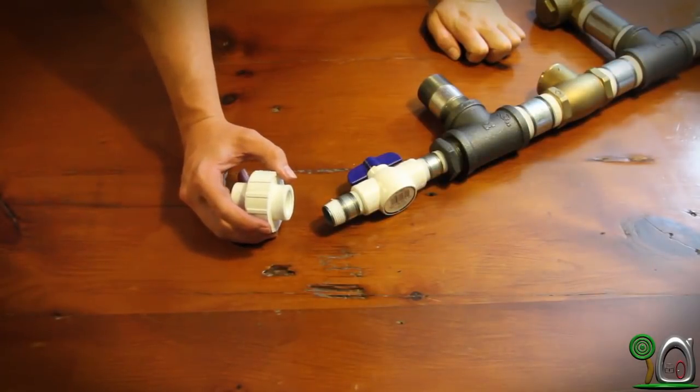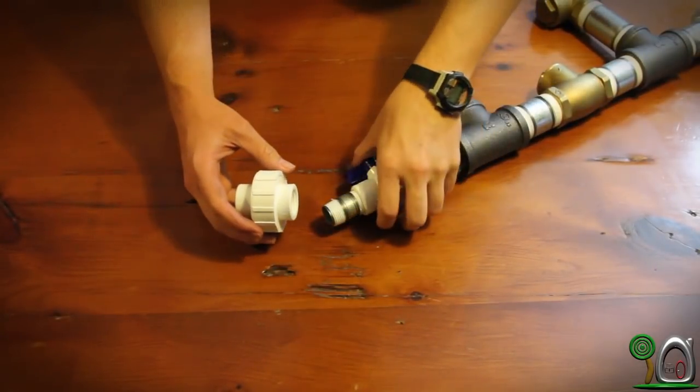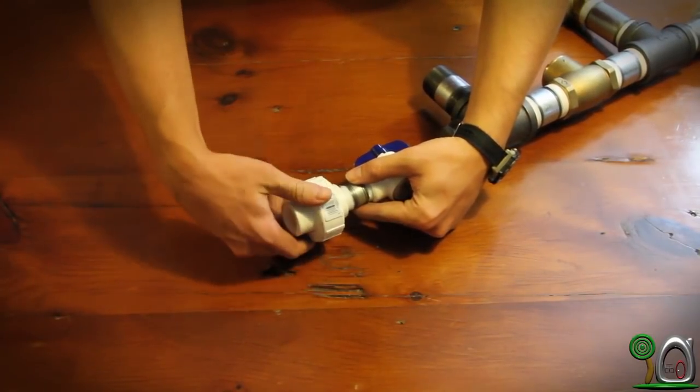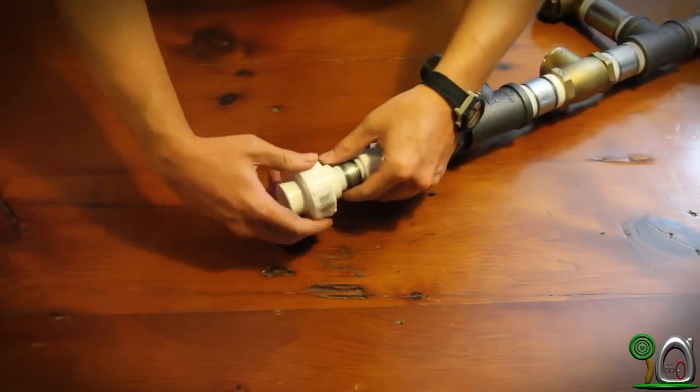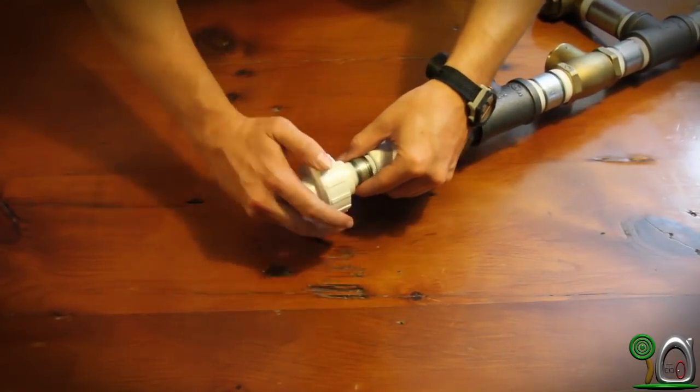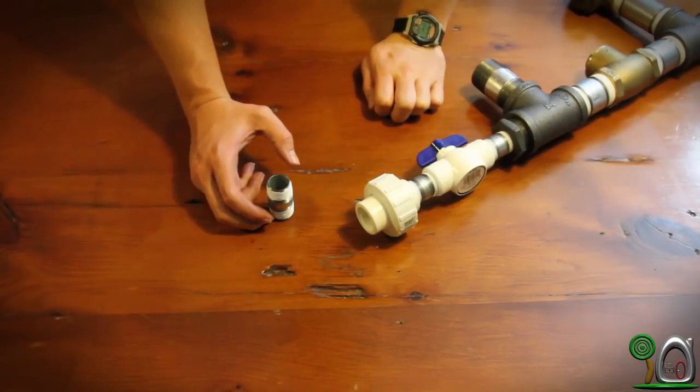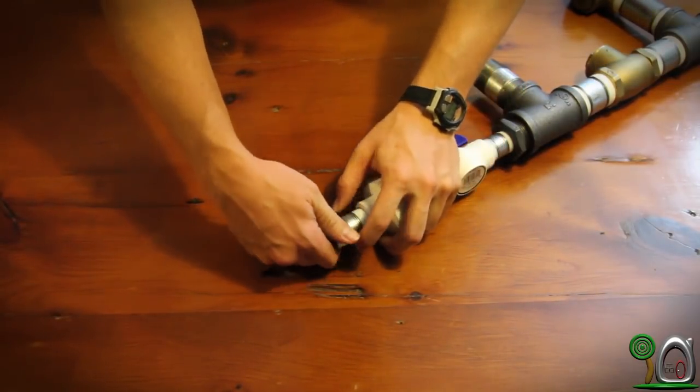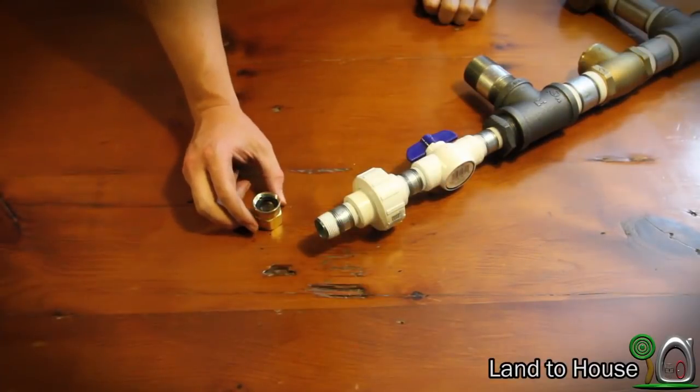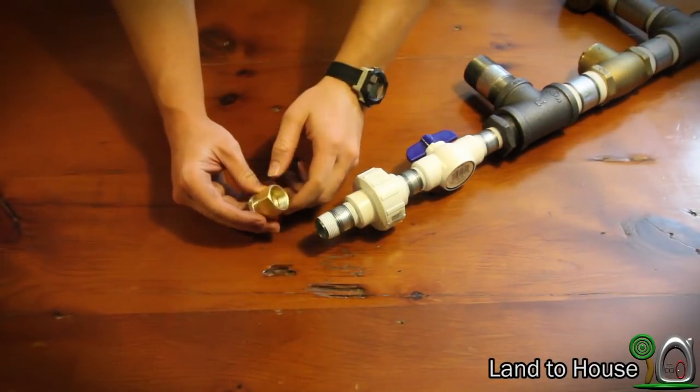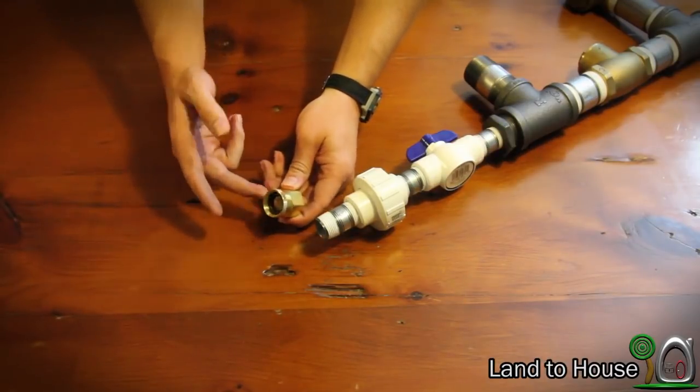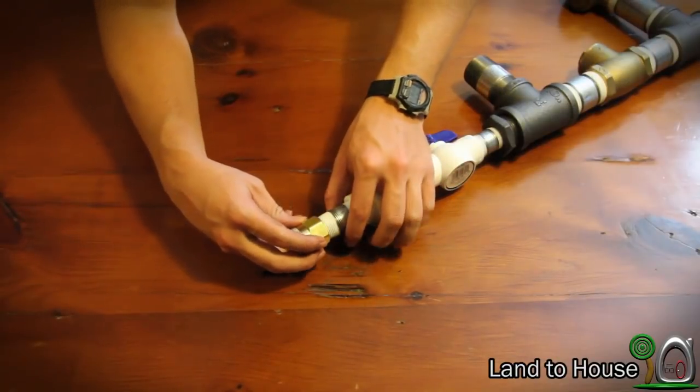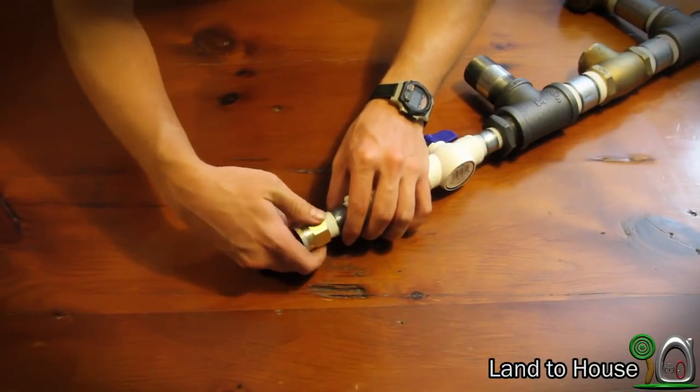For step 21, take your union, your 3 fourths inch union, and screw that onto that last 3 fourths inch pipe nipple. Step 22, take a 3 fourths inch pipe nipple and attach it to the other end of the union. For step 23, take your garden hose on one end thread to a pipe thread on the other end and attach that to the 3 fourths inch pipe nipple.